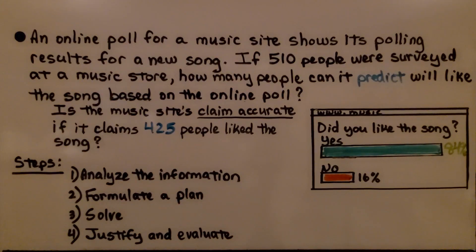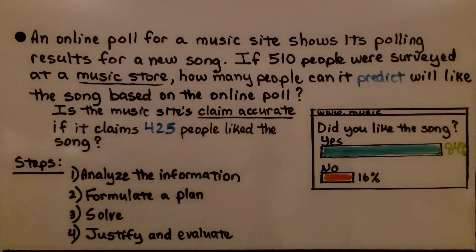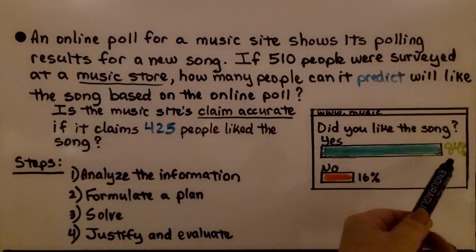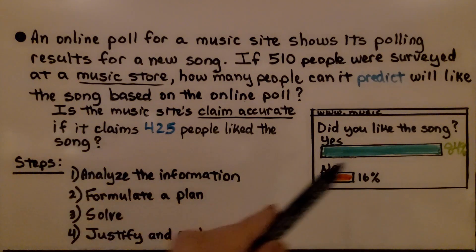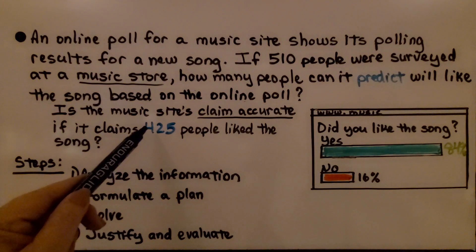An online poll for a music site shows its polling results for a new song. If 510 people were surveyed at a music store, how many people can it predict will like the song based on the online poll? Is the music site's claim accurate if it claims 425 people liked the song? The online poll showed that 84% liked the song and 16% did not, and the poll claims that 84% represents 425 people.